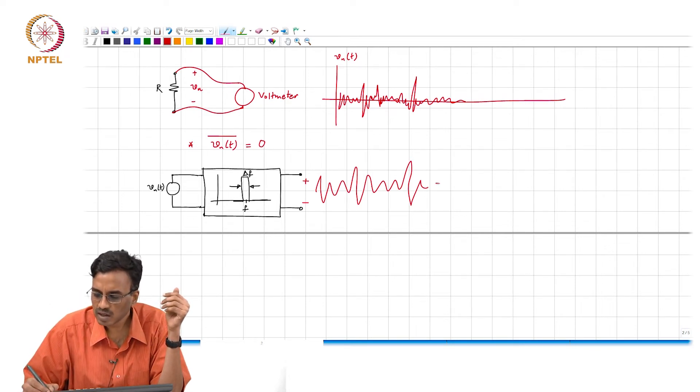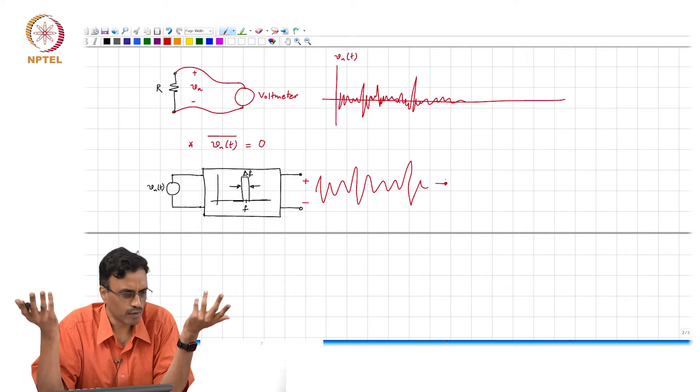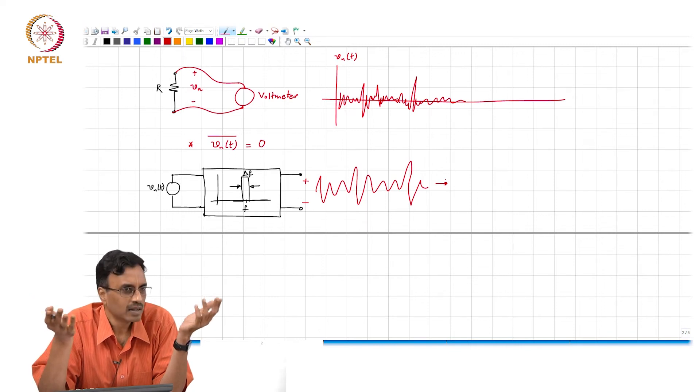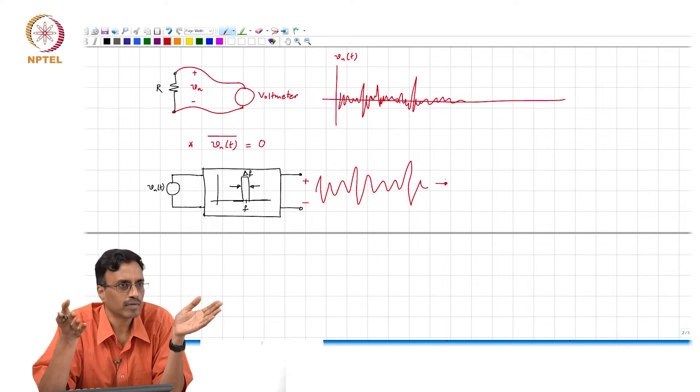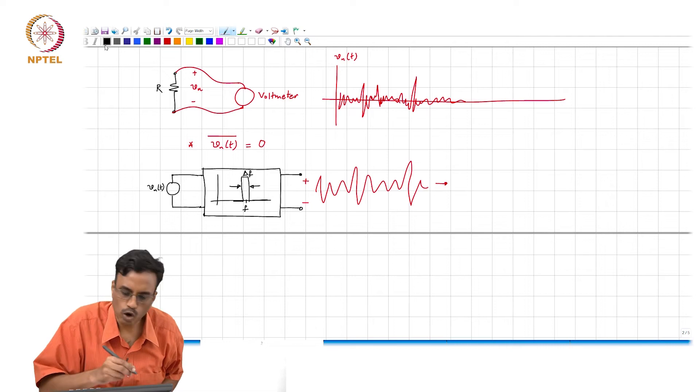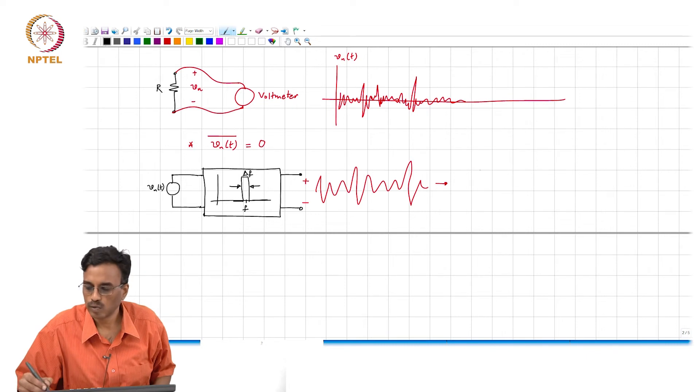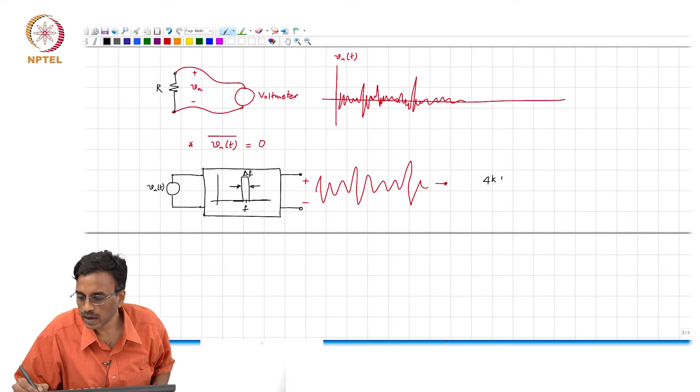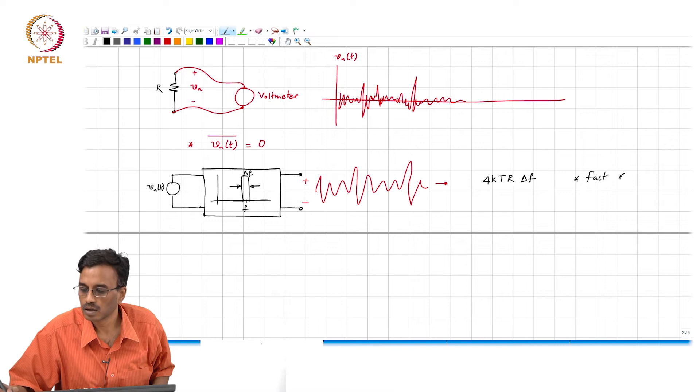So you can measure the mean square value of this waveform. This is a waveform, it is a free country. So nothing is preventing me from measuring the mean square value of this waveform. And if you do so, make the measurement, it turns out that that mean square value will be 4kTR times delta f.